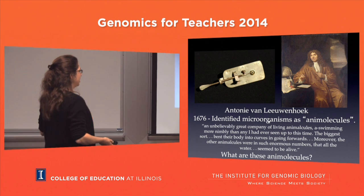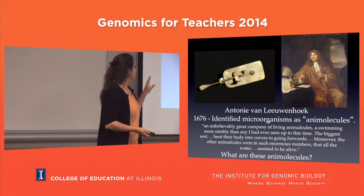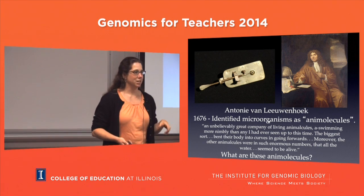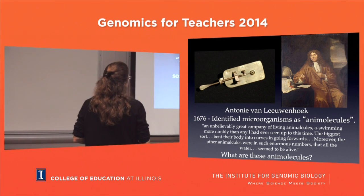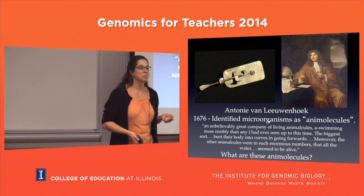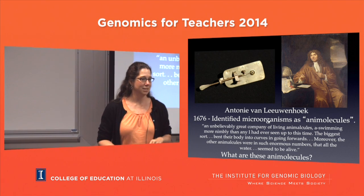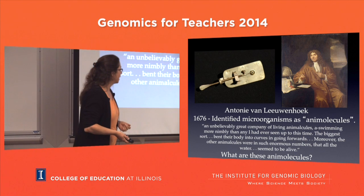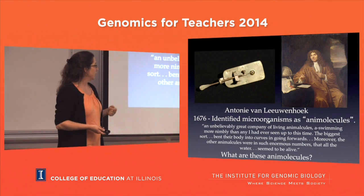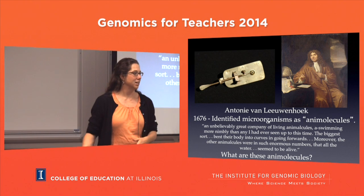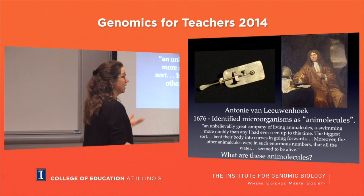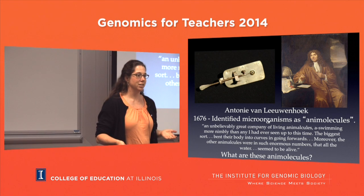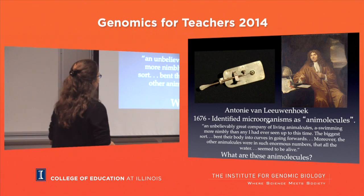Microbiology basically started with Leeuwenhoek in 1676. What he did was identify microorganisms - you've heard about these as 'animal molecules.' He had no idea what they were, but he was really impressed by them. He was actually testing plaque on his teeth and on other people's teeth to see what formed plaques. So he was doing the first microbiome. He developed a microscope and was able to see microorganisms and associate them with plaque.